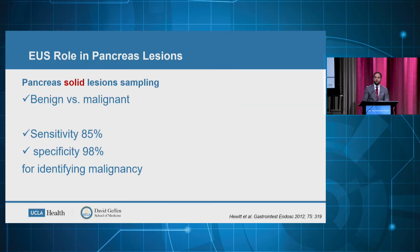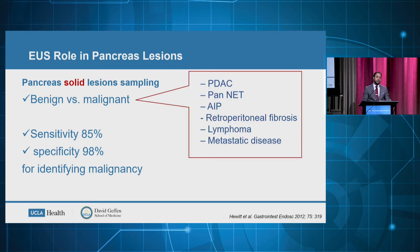EOS is also very helpful in solid pancreatic lesions. It helps in differentiating between benign and malignant, with very high specificity and significantly high sensitivity as well. It's considered the standard of practice for patients with pancreatic masses nowadays.